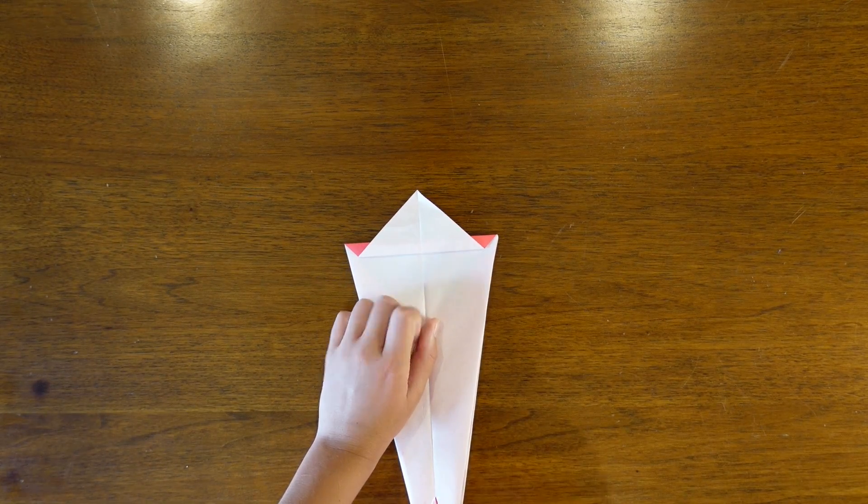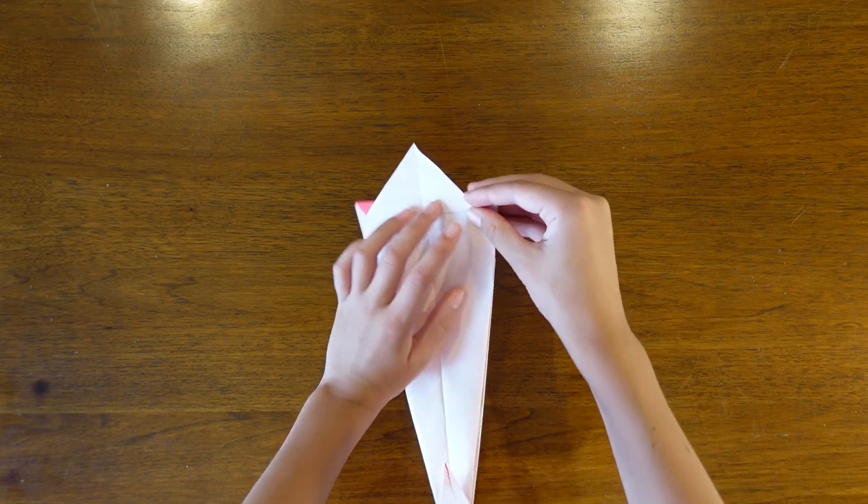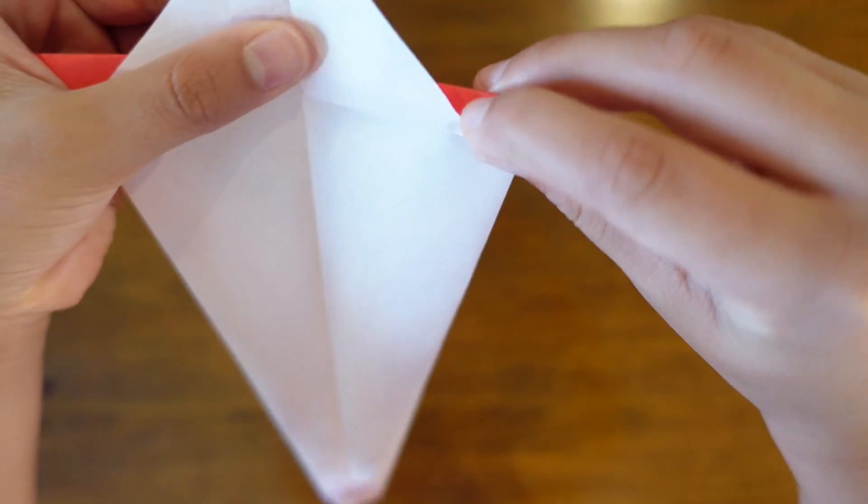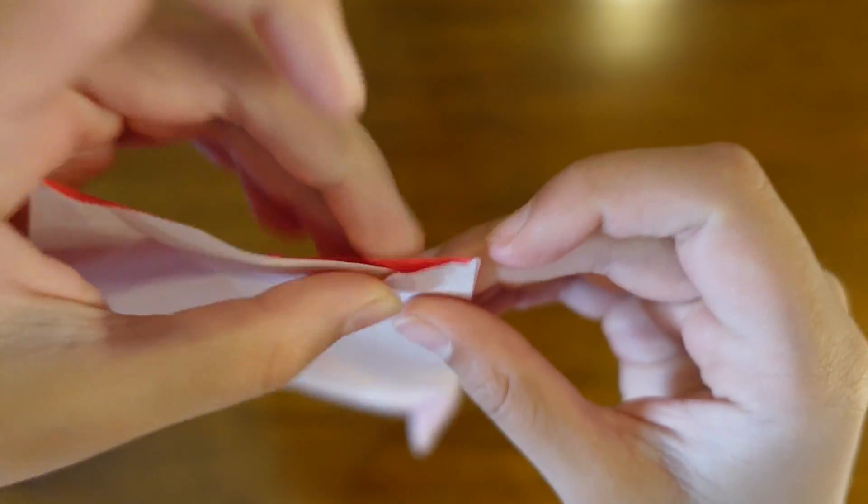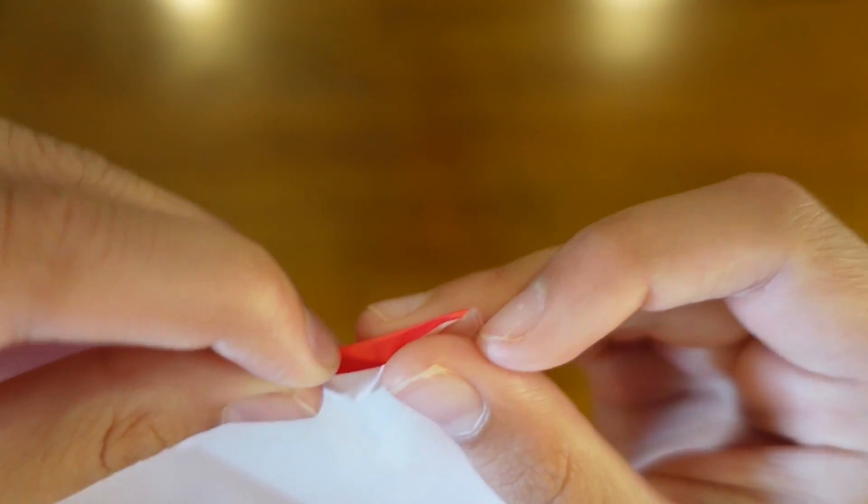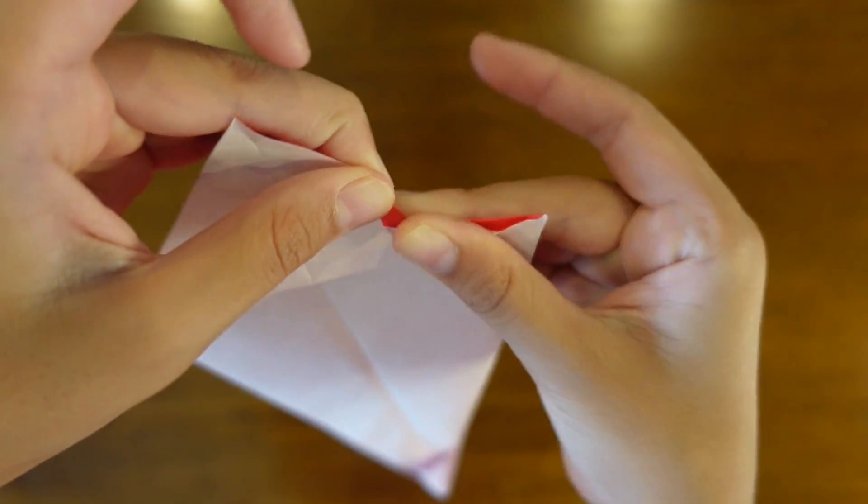We're going to fold the bottom edge up to the top edge. And then we're going to slide the paper out and then crease so that the paper looks like that.